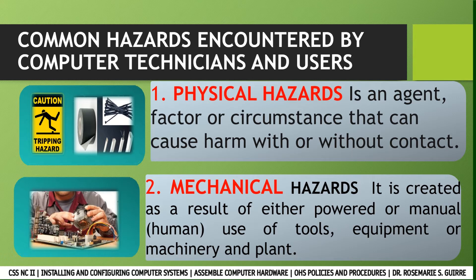The second hazard is mechanical hazard. It is created as a result of either powered or manual use of tools, equipment, or machinery. When working on electronic equipment, ask yourself first: is there any way this equipment could hurt me? For example, you might stick your hand in a printer and suddenly the paper feed arm moves, feeding not only paper but a piece of your finger through the printer. When working on electronic equipment, always be alert to any possibility of being hurt by moving parts.